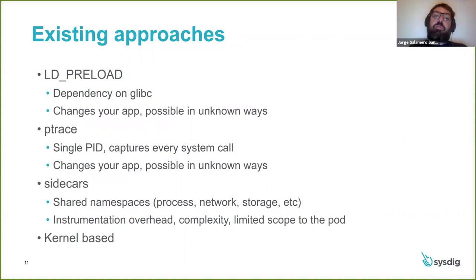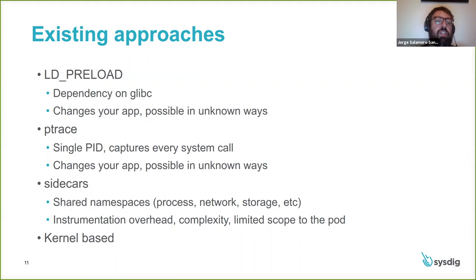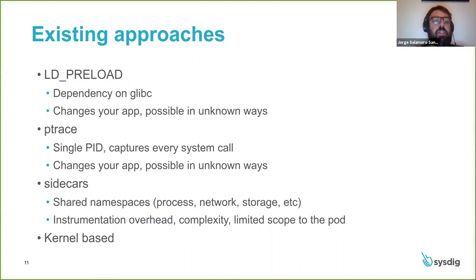There are a bunch of different approaches for doing runtime detection or visibility. One approach is using LD_PRELOAD. LD_PRELOAD allows us to hook into all the library calls and see what each of our processes is doing. The consequence of using LD_PRELOAD is that these mechanisms actually allow us to change application behavior, so from a security perspective, that's something you might not be ready to trade off. Ptrace is another option, but the limitation of Ptrace is that you can only trace or monitor a single process ID and it will be capturing every system call, so it can have a significant performance impact and can also change behavior.